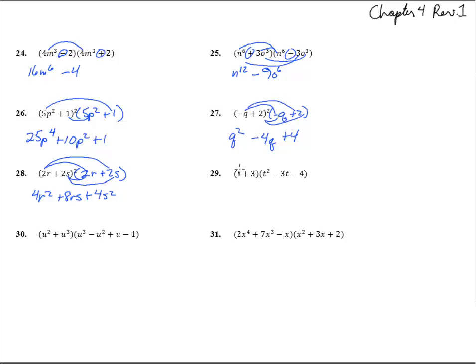This one's going to get a little big here. We've got a binomial times a trinomial, so here's t cubed, minus 3t squared, minus 4t. I'm going to change colors and see if we can combine them as well as possible here. Plus 3t squared, minus 9t, minus 12. That's t cubed. Look at that, those just canceled out. Minus 13t, minus 12. And we're good.